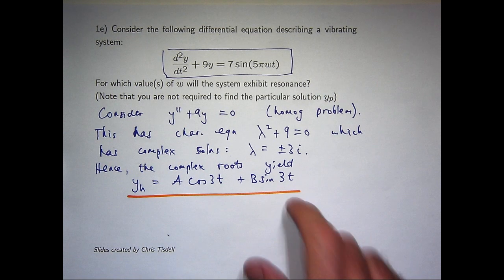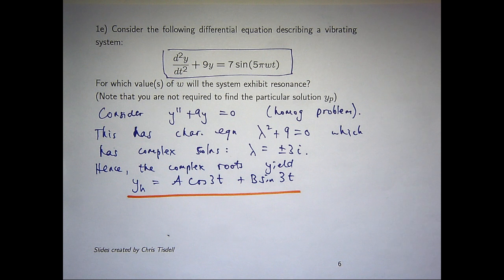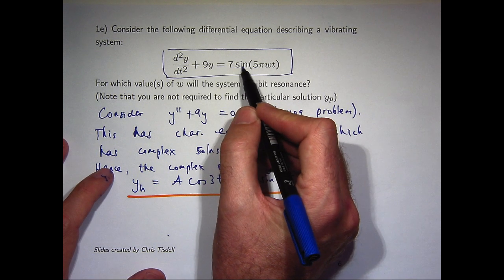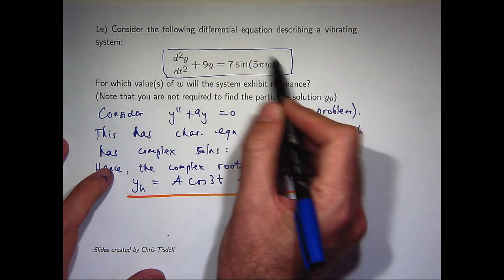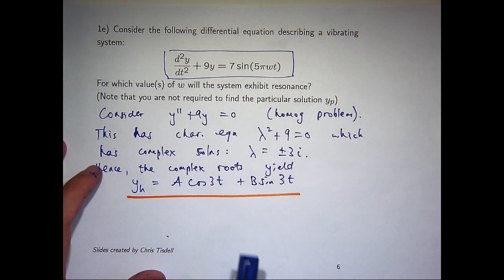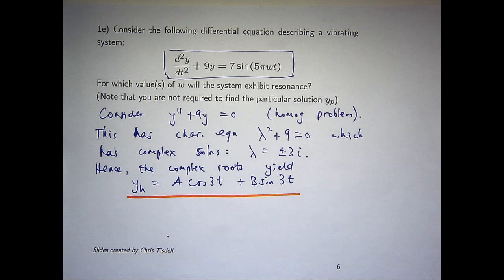Now, based on that and on the right hand side, what we would like to do is construct y sub p. We're not going to totally determine what it is, but just the form. Well, if this is 7 sine 3t, that means we would have to choose a particular form of y sub p.